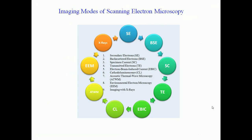There are various imaging modes in the scanning electron microscope: secondary electron mode, backscattered electron mode, sample current, transmitted electron mode, electron beam induced current (EBIC), cathodoluminescence, acoustic thermal wave microscopy (ATWM), and X-ray mode. Secondary electron and backscattered electron modes are extensively used. The X-rays generated from the sample represent another important mode, which we will use for chemical analysis.